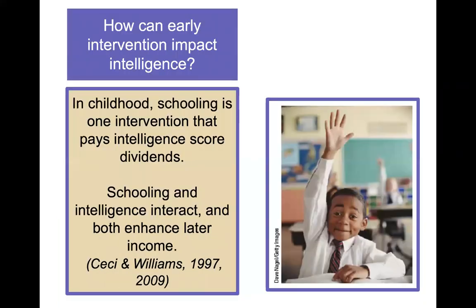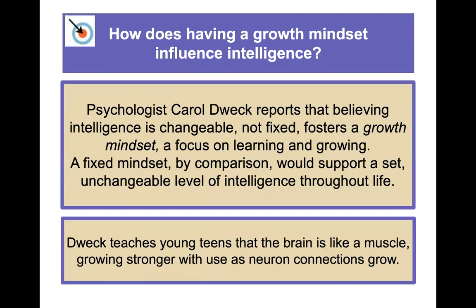How can early intervention affect intelligence? In childhood, schooling is one intervention that pays intelligence score dividends — schooling and intelligence interact, and both enhance later income. Psychologist Carol Dweck reports that believing intelligence is changeable, not fixed, fosters a growth mindset — a focus on learning and growing. A fixed mindset, by contrast, supports a set, unchangeable level of intelligence through life. Dweck teaches young teens that the brain is like a muscle growing stronger with use as neuron connections grow, and research into the effects of growth mindset on intelligence is ongoing.